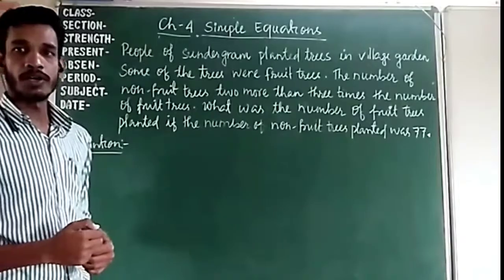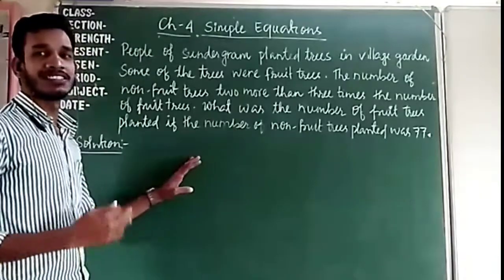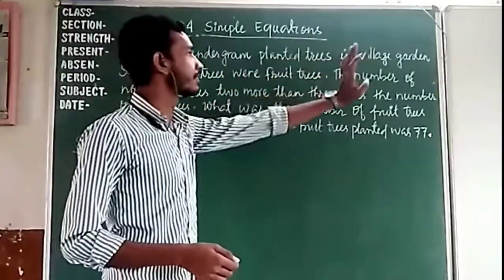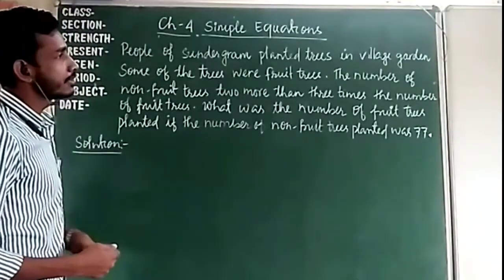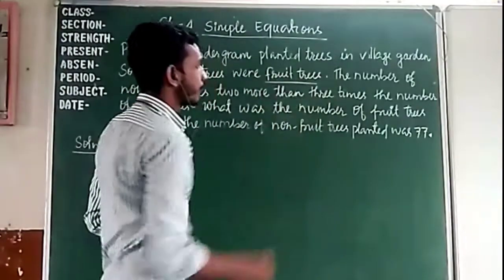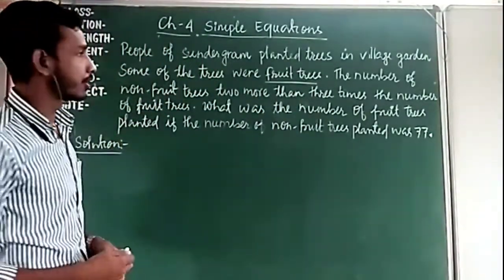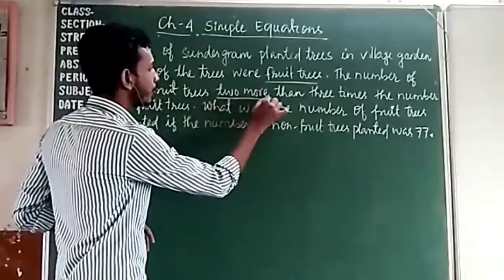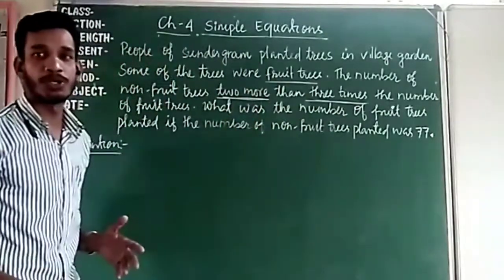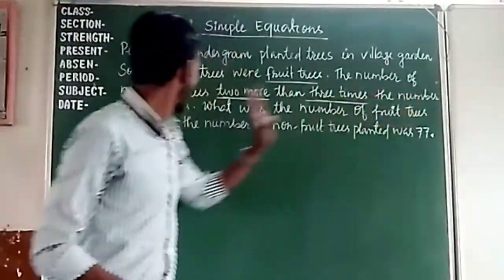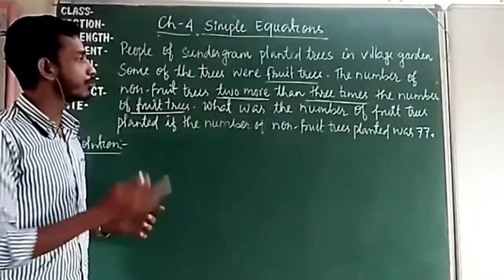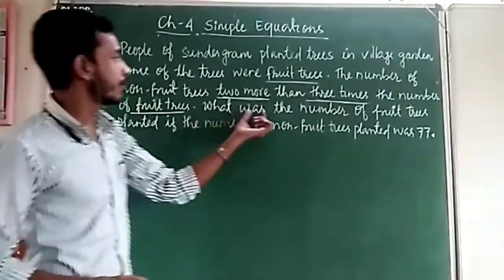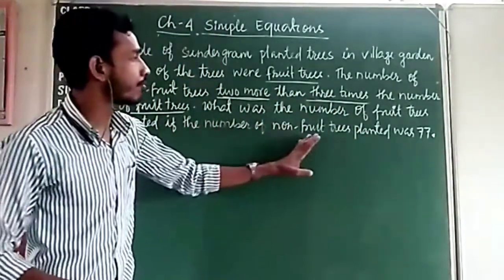Let's see the next question — it is long but don't be scared. People went planting trees in the village garden. Some of the trees were fruit trees and some were non-fruit trees. The number of non-fruit trees was 2 more than 3 times the number of fruit trees.